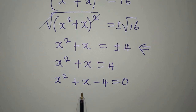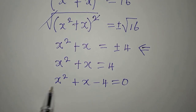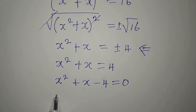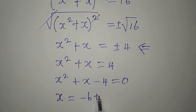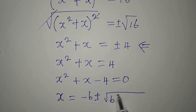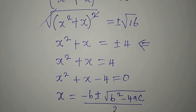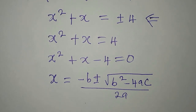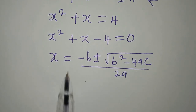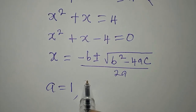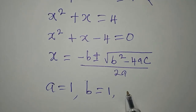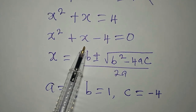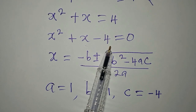Now the next thing to do is to solve this quadratic equation. Remember, this is a quadratic equation and we can use the formula to deal with this. x is equal to minus b plus or minus square root of b squared minus 4ac, all over 2 times a. This is called the quadratic general formula. According to this equation, our a is 1, our b is 1, and our c is minus 4. a is the coefficient of x squared, b is the coefficient of x, and c is the constant, which is minus 4.